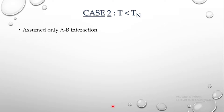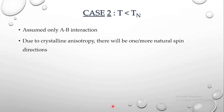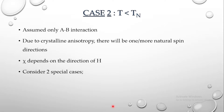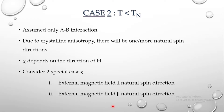Due to crystalline anisotropy, there will be one or more natural spin directions along which the spins will tend to align. The magnetic susceptibility behavior also depends on the direction of the external magnetic field. For that we need to consider two cases of special interest: one where the external magnetic field is applied perpendicular to the natural spin direction or spin axis, and second where the external magnetic field is applied parallel to the natural spin direction.